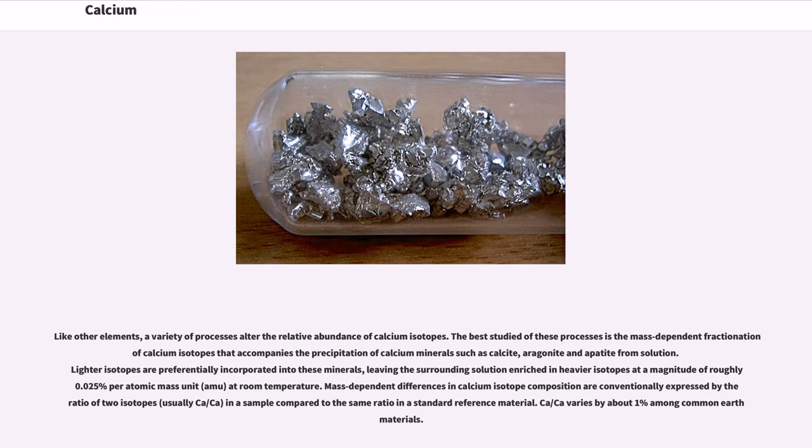Like other elements, a variety of processes alter the relative abundance of calcium isotopes. The best studied of these processes is the mass-dependent fractionation of calcium isotopes that accompanies the precipitation of calcium minerals such as calcite, aragonite, and apatite from solution. Lighter isotopes are preferentially incorporated into these minerals, leaving the surrounding solution enriched in heavier isotopes at a magnitude of roughly 0.025% per atomic mass unit (AMU) at room temperature. Mass-dependent differences in calcium isotope composition are conventionally expressed by their ratio of two isotopes, usually ⁴⁴Ca/⁴⁰Ca, in a sample compared to the same ratio in a standard reference material. ⁴⁴Ca/⁴⁰Ca varies by about 1% among common Earth materials.